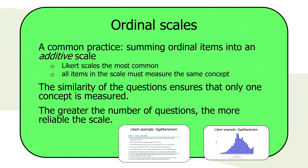All items in the scale must measure the same concept. The similarity of the questions ensures that only one concept is measured. So you have all these items you're putting in an ordinal scale — they're all very similar. And methodologists tell us that the greater the number of questions, the more reliable the scale.